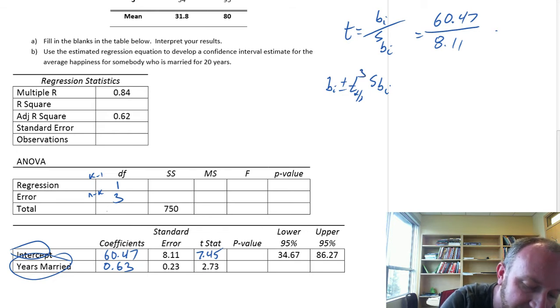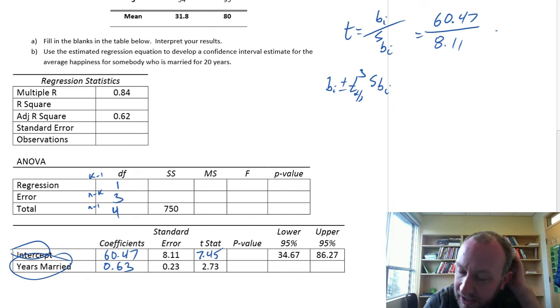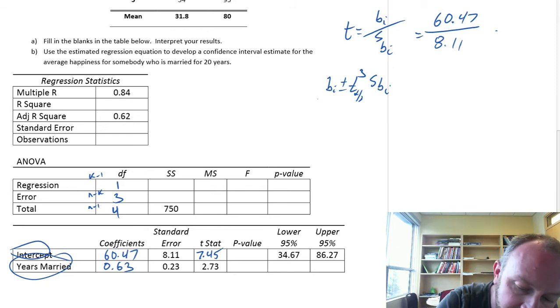So the degrees of freedom for this confidence interval is 3. And finally our total, this is n minus 1, so this is 4.